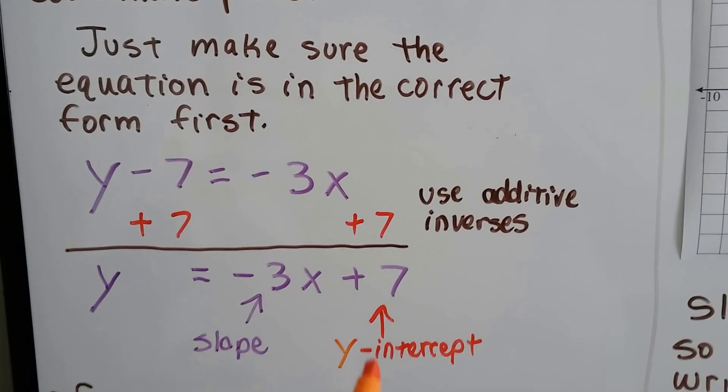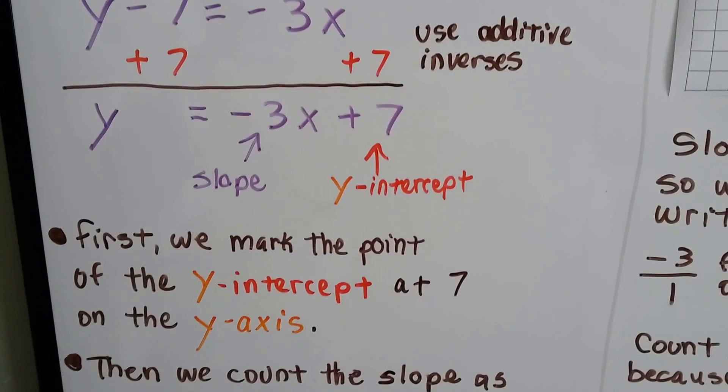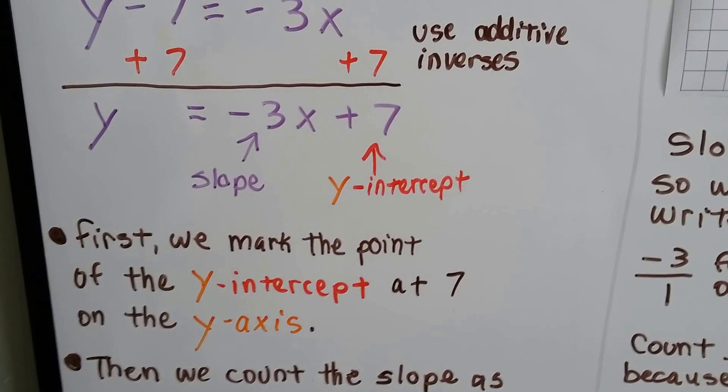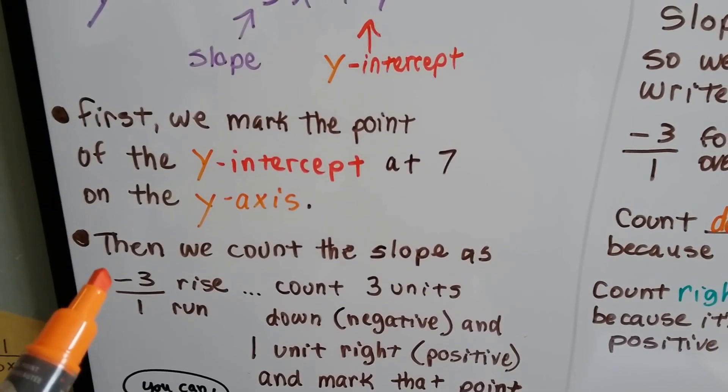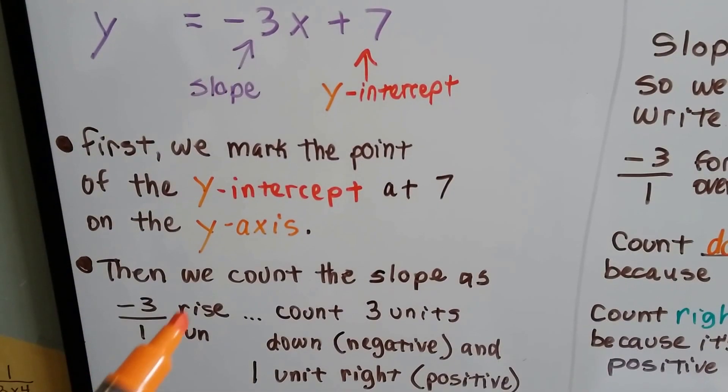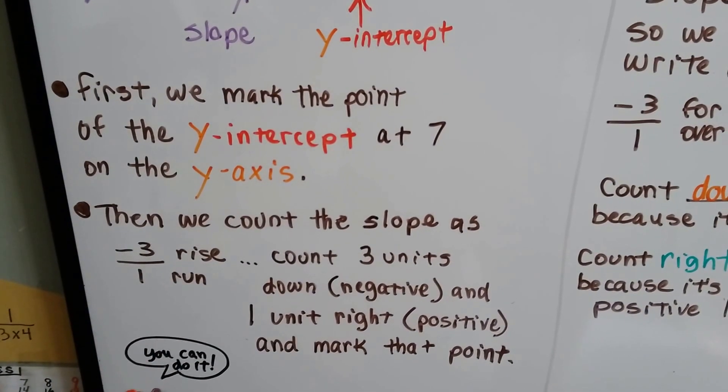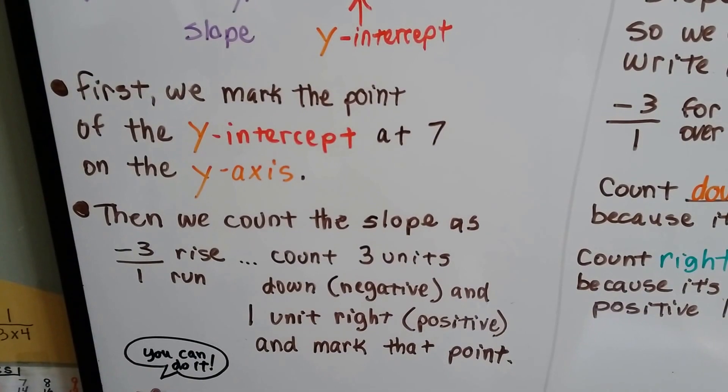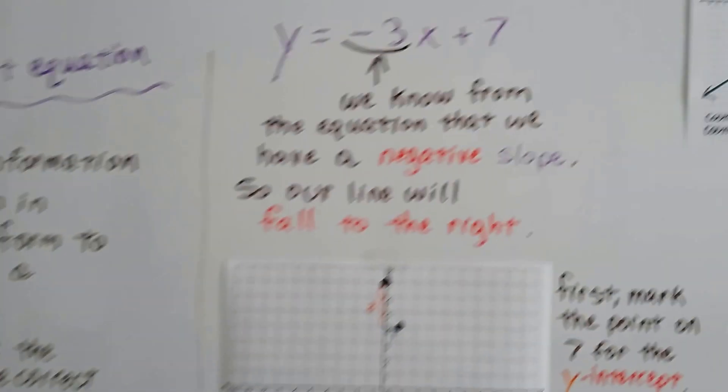We see our slope is negative 3, and our y-intercept is 7. The first thing we do is we mark the point of the y-intercept at 7 on the y-axis. Then we count the slope as negative 3, and we put it over 1. So we have our rise over our run. We count 3 units down because it's negative, and 1 unit to the right because it's positive, and we mark that point. Now we have two points.